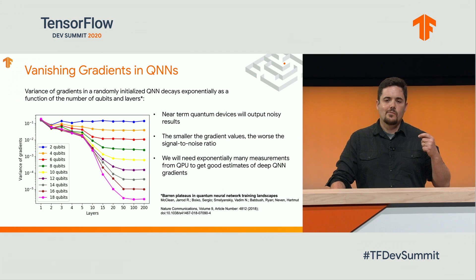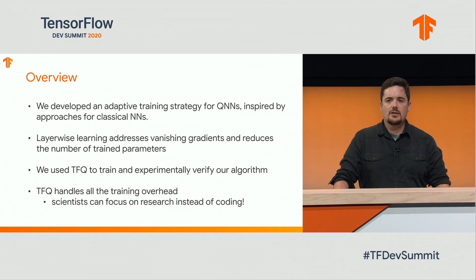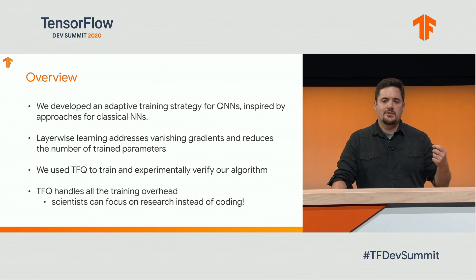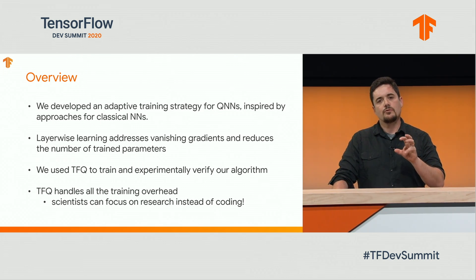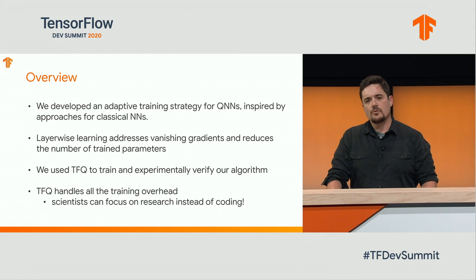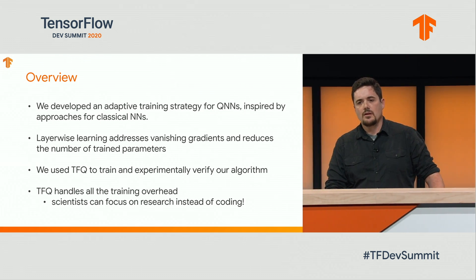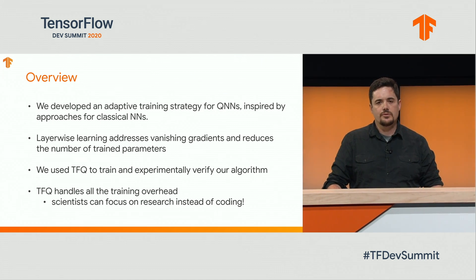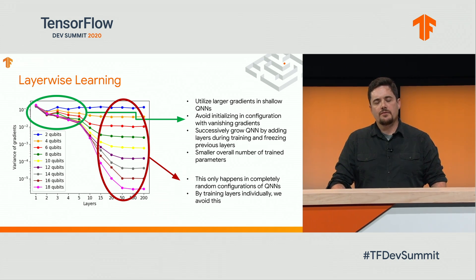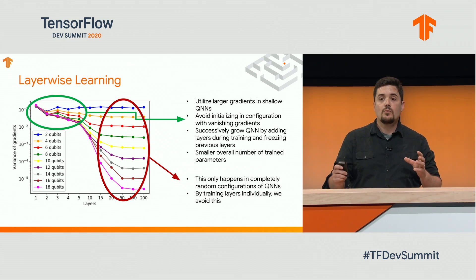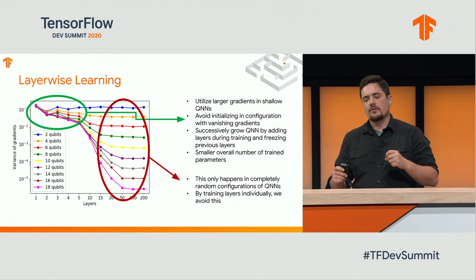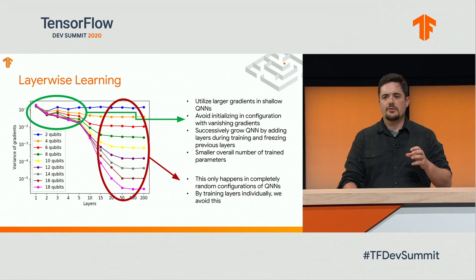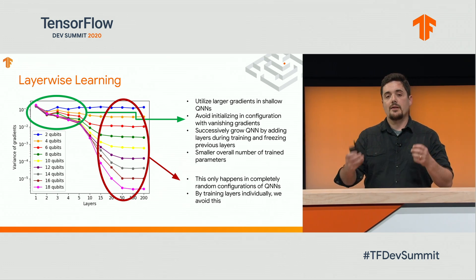With our technique, we address the vanishing gradient problem, and we also looked at using the new library TensorFlow Quantum to train and experimentally verify our algorithm. The great thing about TensorFlow Quantum is that it handles all of our training overhead, and we can focus on research rather than coding and getting deep into the internals. Looking at this vanishing gradient problem, we may utilize larger gradients in shallow quantum neural networks, and we can avoid configurations and random initializations which may lead to a Barren Plateau problem when we apply layer-wise learning.